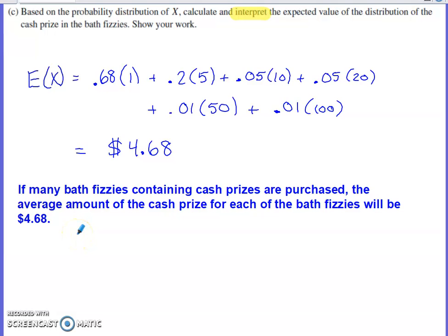So we buy 10,000 of these bath fizzies and figure out what the cash prize is in each of the 10,000. We're going to end up having an average of approximately $4.68 per bath fizzies. You could have done this a little differently. You could have said the expected value of the prize per bath fizzies is $4.68.